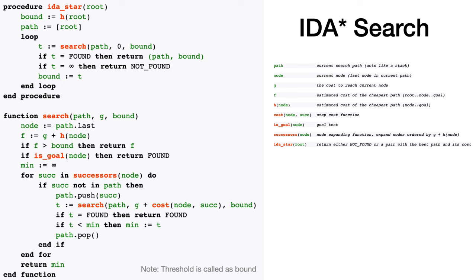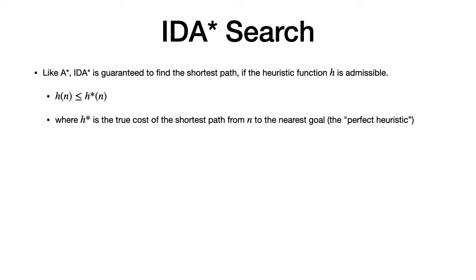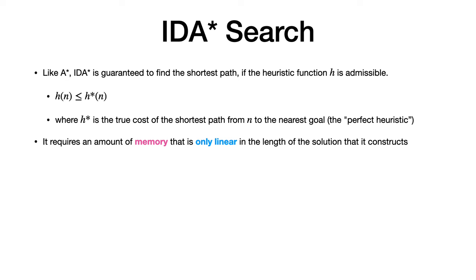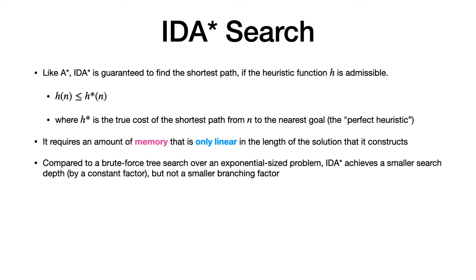Regarding complexity: like A*, IDA* is also guaranteed to find the shortest path, provided the heuristic function H is admissible — meaning it never overestimates the true cost. It requires only linear memory, greatly reducing memory requirements compared to A*.